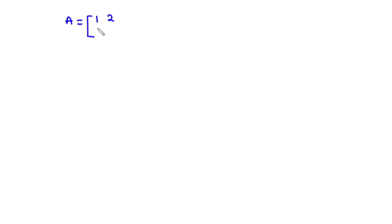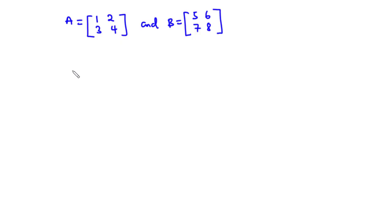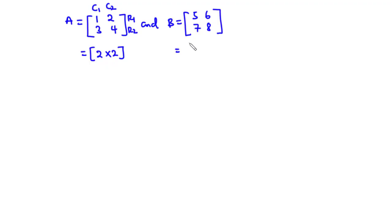Given two matrices, say A and B, let's assume that matrix A has elements 1, 2, 3, 4, and matrix B has elements 5, 6, 7, 8. The order of matrix A is 2 by 2 because it has two rows and two columns. Also, the order of matrix B is 2 by 2.